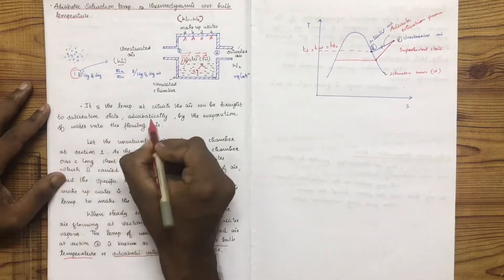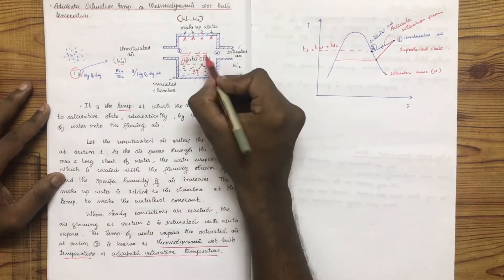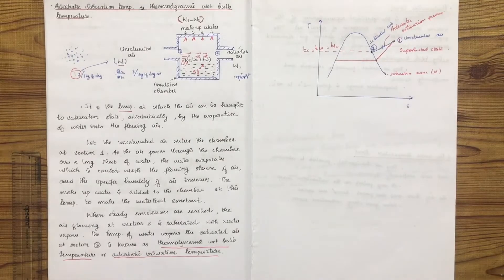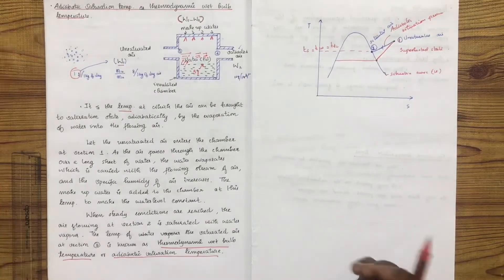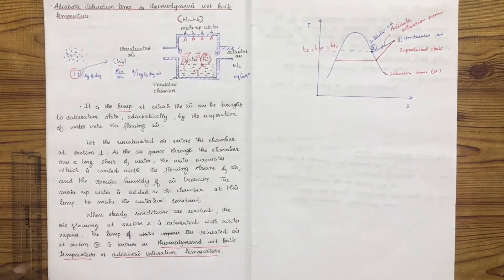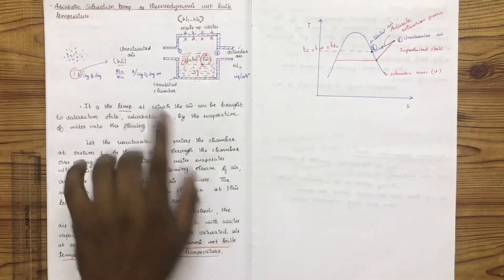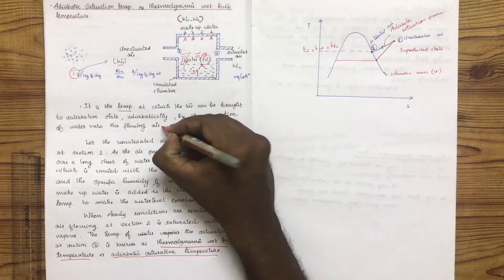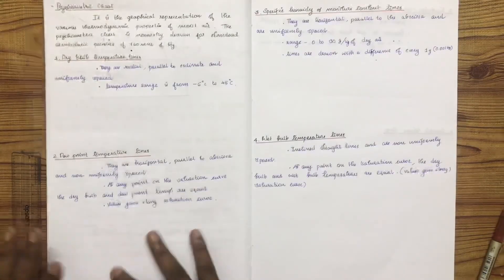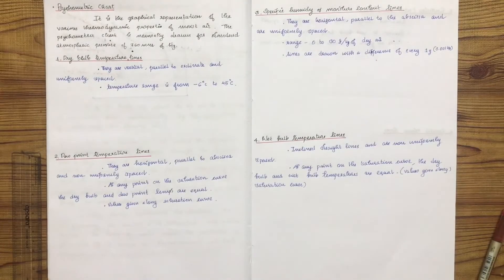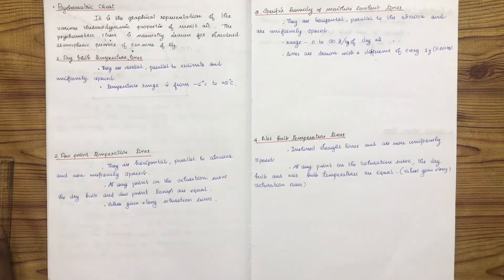This is the adiabatic saturation temperature and thermodynamic wet bulb temperature — this is the correct definition. This is the adiabatic saturation temperature. This is the psychrometric chart, which is very simple. The report covers humidification and dehumidification, as shown in the image.